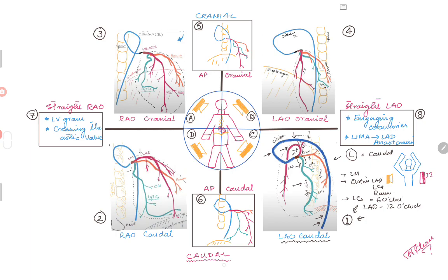This is a good view to look at the proximal portion of the left main, left circumflex, and LAD. It is not a very good view for the distal vessels or distal branching vessels, as they will be overlapped and foreshortened, but nevertheless a very good view for the proximal segment. This view is also known as the spider view.